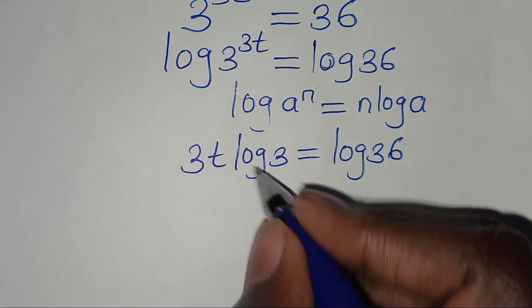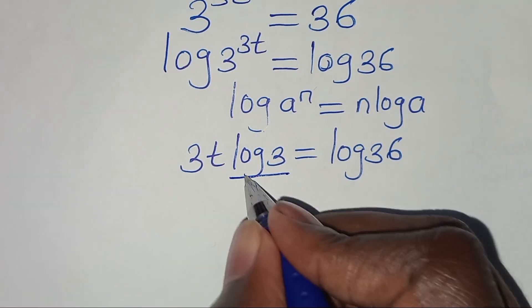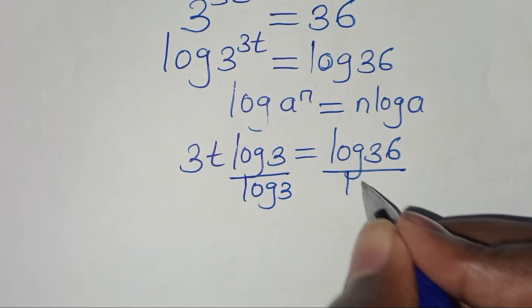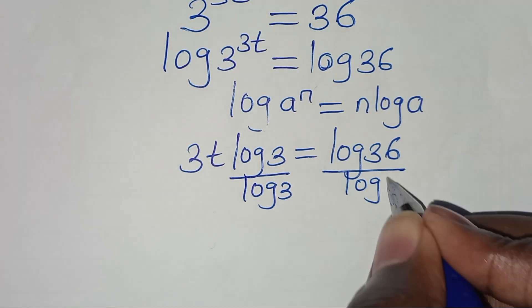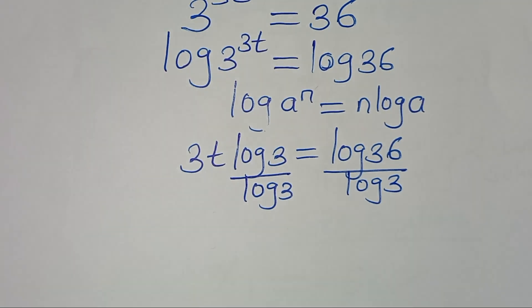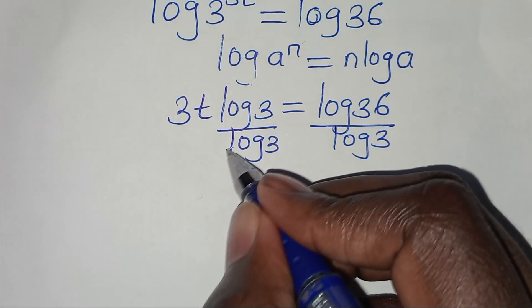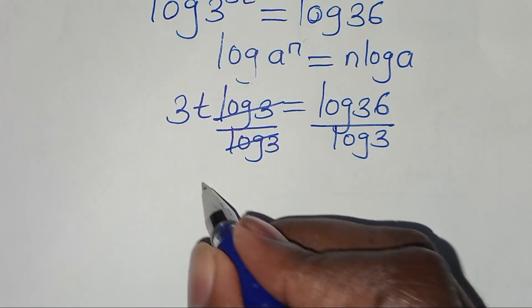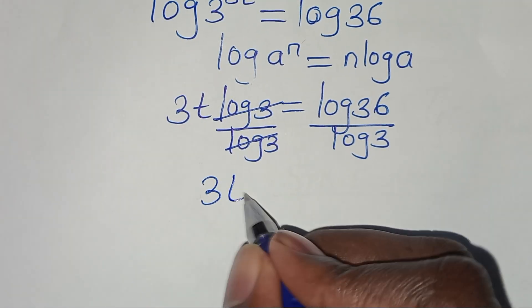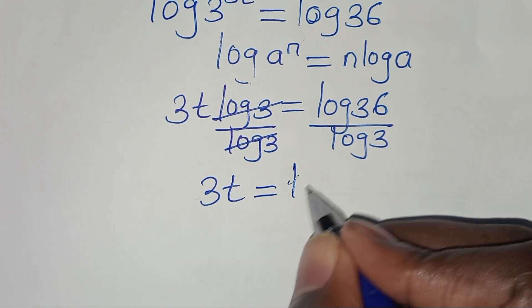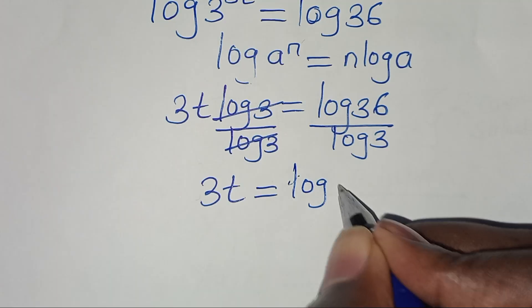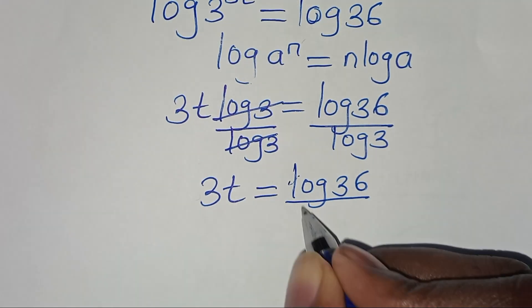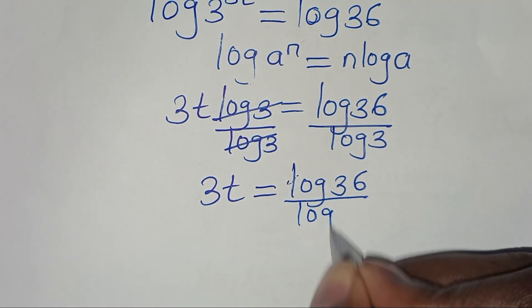The next step is to divide both sides by log 3. So that now we simplify here — then we have 3t is equal to log 36 divided by log 3.